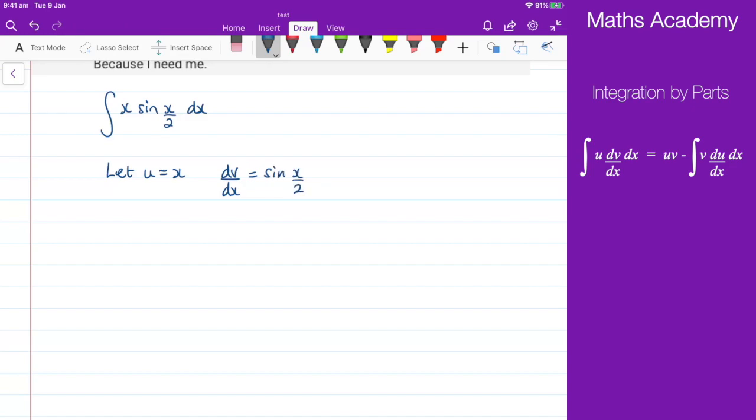I need to differentiate the u term, so that will give me du by dx, that's just equal to 1. And integrating to get v, well, that would be negative 2 cosine of x over 2.